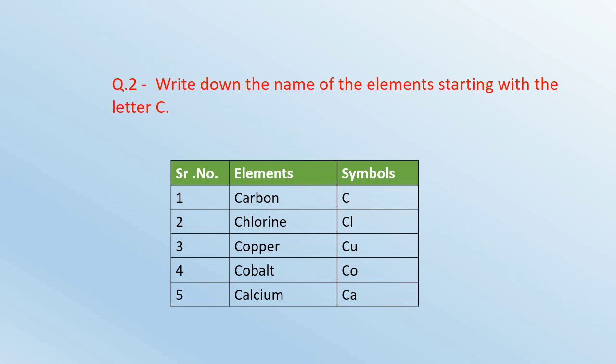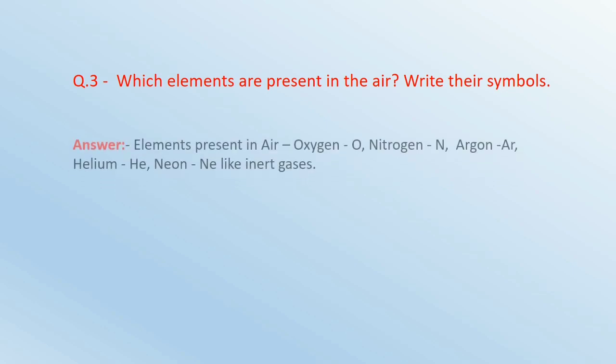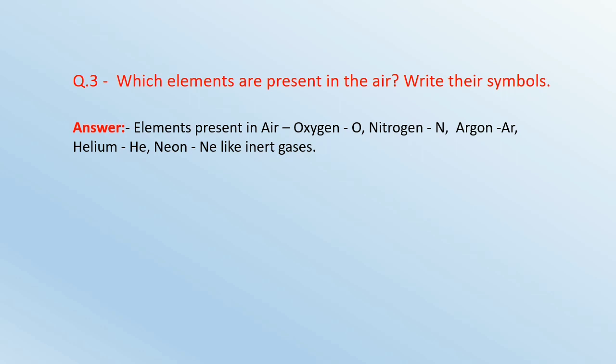Question number 3: Which elements are present in the air? Write their symbols. And the answer is: Elements present in the air are Oxygen symbol O, Nitrogen symbol N, Argon symbol Ar, Helium having symbol He, Neon having symbol Ne. These are some inert gases which are present in the air.